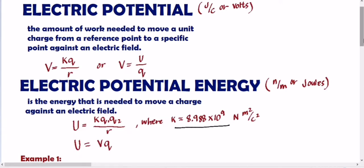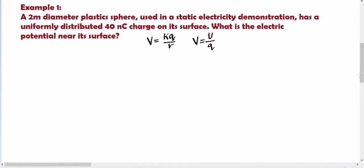So for you to understand it more, let's have the first example. A 2-meter diameter plastic sphere used in a static electricity demonstration has a uniformly distributed 40 nanocoulomb charge on its surface. What is the electric potential near its surface? So una, kailangan nyo malaman, is it the electric potential or the electric potential energy being asked? According to the question, what is the electric potential? So V — electric potential. So which formula will we use? We need to know first the given values. The given here are: 2 meters, which is your distance, denoted as R. Take note that the standard unit of distance must be meters. Then we have 40 nanocoulombs, which is our charge Q.